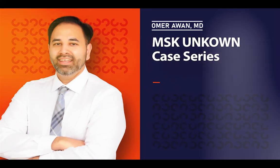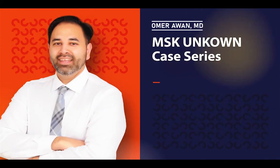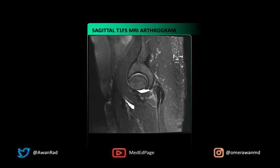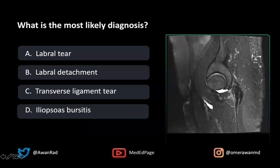Hello everyone, and welcome to MSK Unknown Case Series, Case 86. Here we have a sagittal T1 fat sat MRI arthrogram through the hip. The high yield question here is: what's the most likely diagnosis?